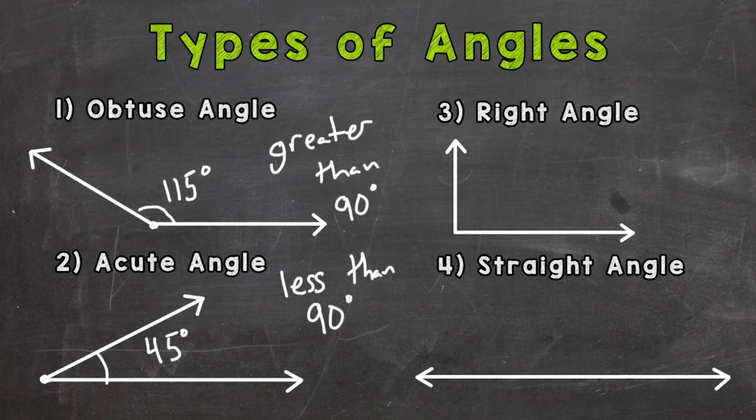Number three, we have a right angle. To show a right angle, whenever you see a box in a corner like that, that signifies a right angle, and that means it equals exactly 90 degrees.